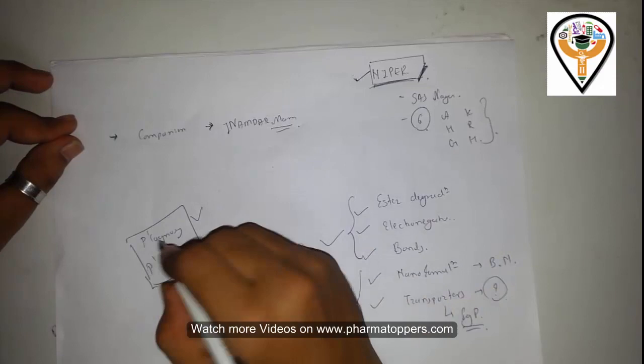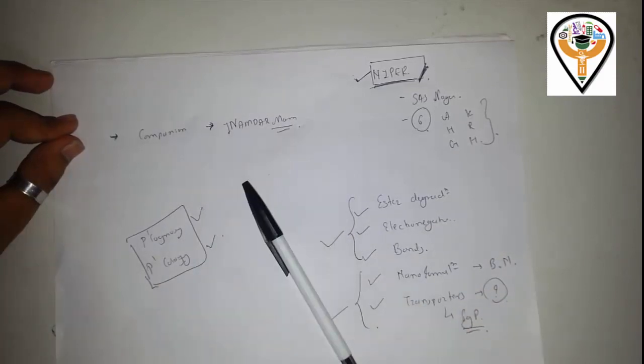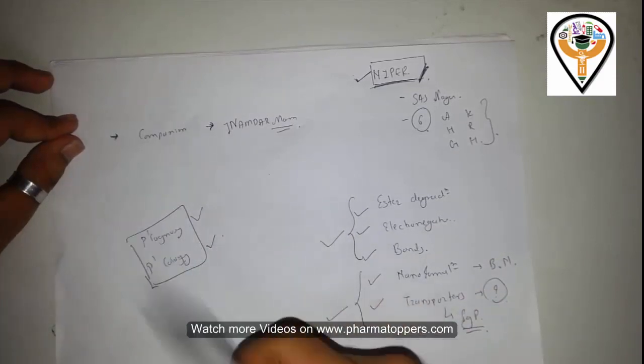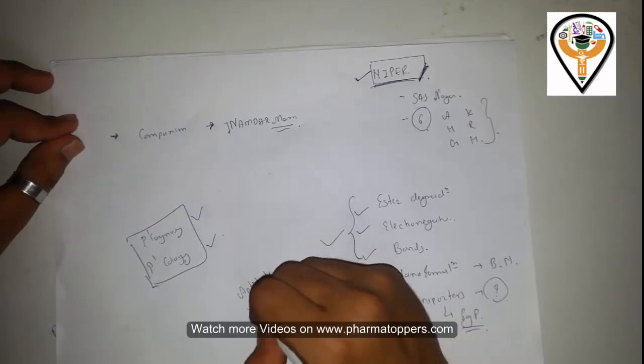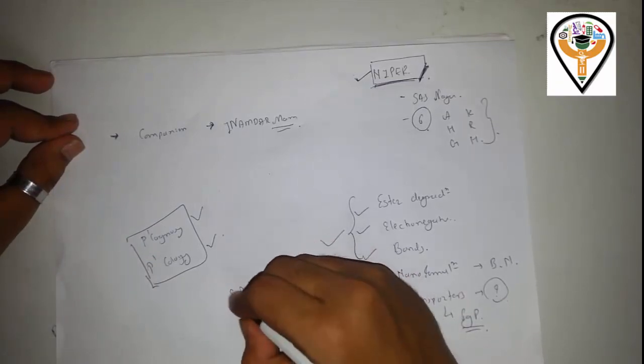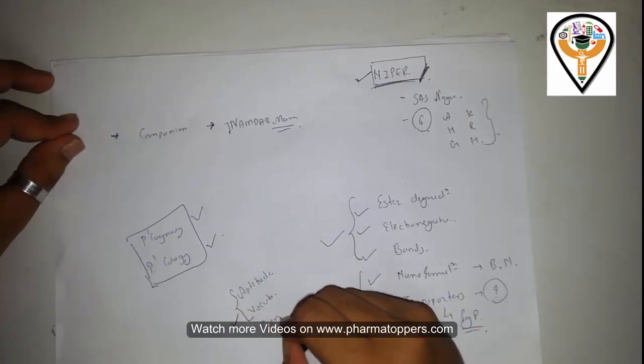Apart from these four main subjects—pharmaceutics, analysis, pharmacology, and pharmacognosy—there are some subjects like aptitude, vocabulary in NIPA, and also general knowledge.